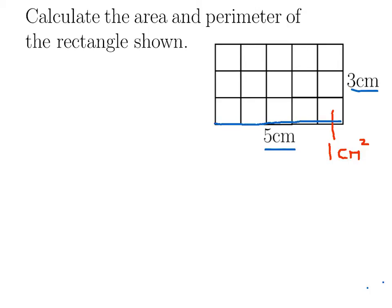And then similarly with the width, we have 3cm squares there. So we can just multiply and say that the area is going to be length times width, which will be 5 times 3, giving us 15cm squared altogether.